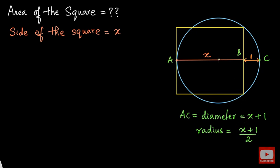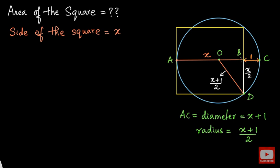Now let me name the center of this circle as O, and I will name this point over here as D. I will join O and D. We know that OD is also the radius, so the length of OD is x plus 1 upon 2. We also know that the length BD will be half of the side of the square, that is x upon 2. And obviously this will be a right angle here. I want to know the length of OB so that I can apply the Pythagorean theorem and find the value of x.